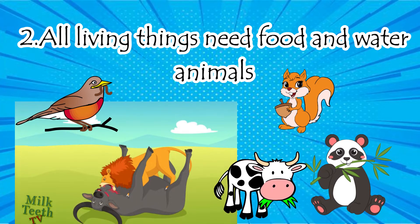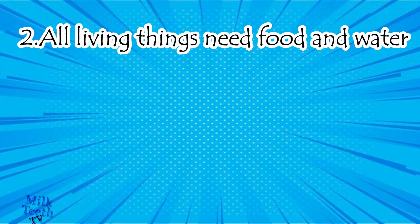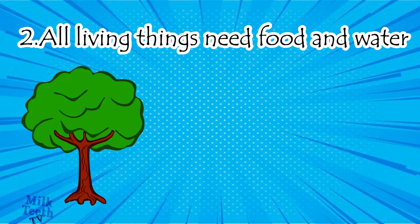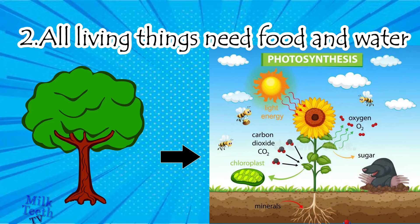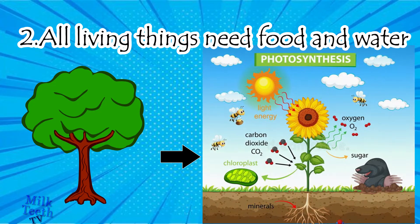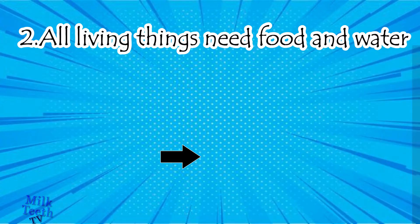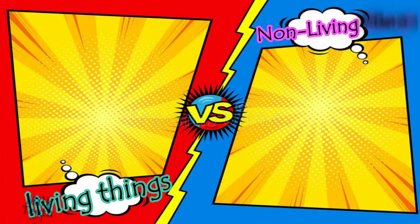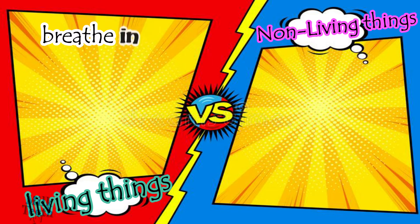Even plants and trees make their own food with the help of sunlight, water, and air through a process called photosynthesis. The third difference between living things and non-living things is that living things breathe in air — humans, animals, birds, and trees all breathe in air, whereas non-living things do not.